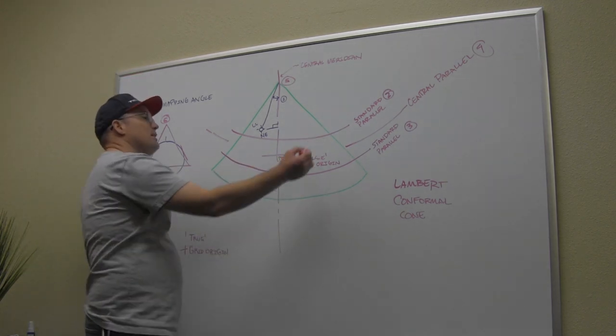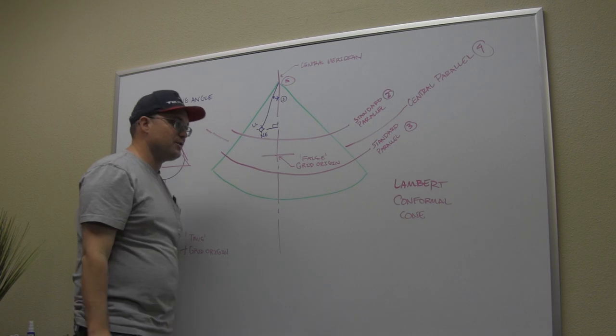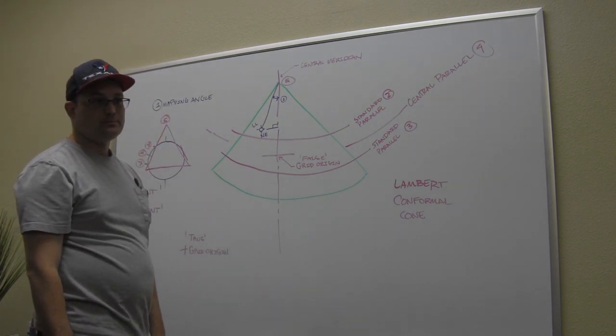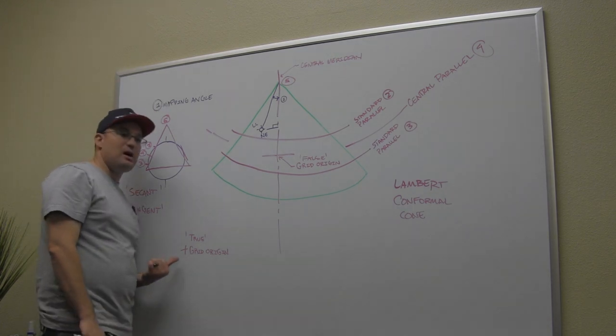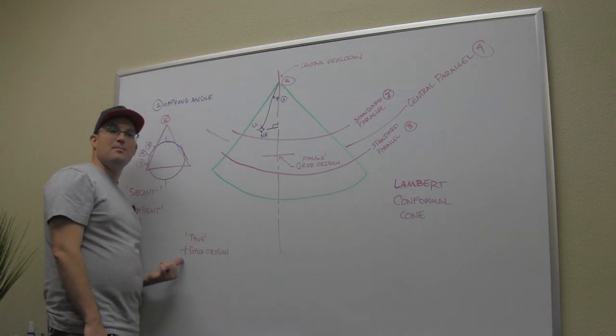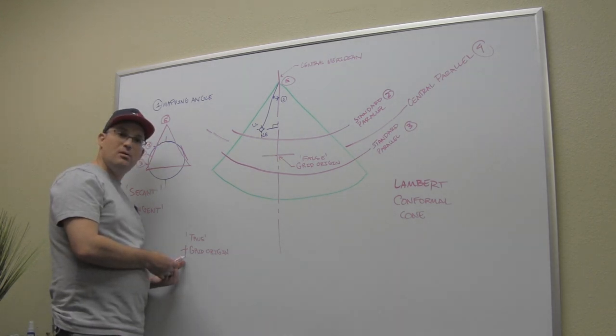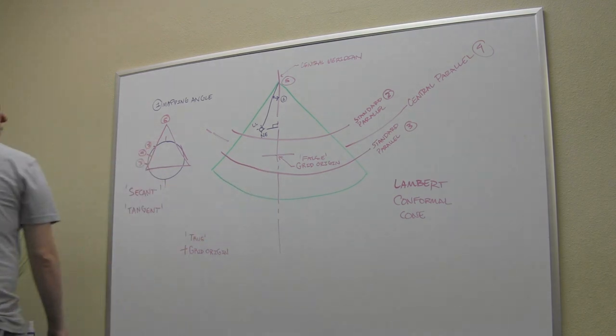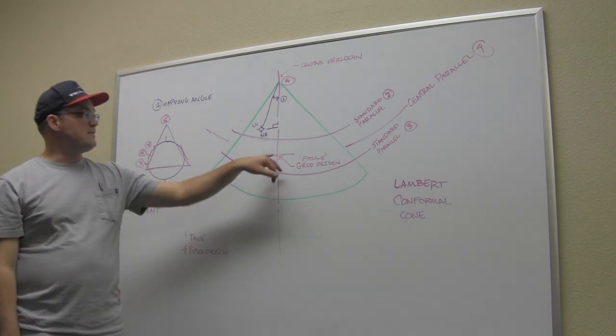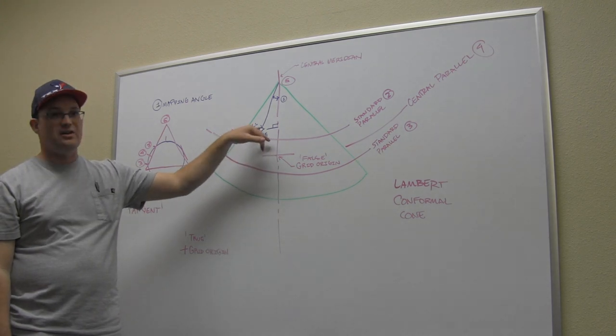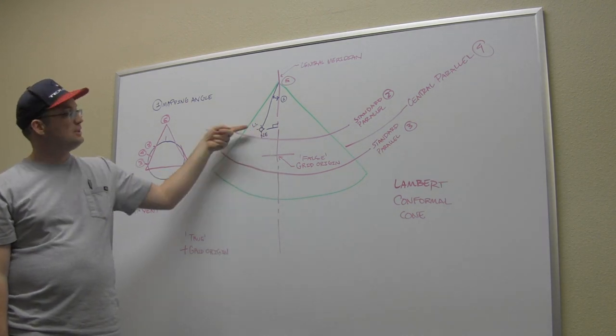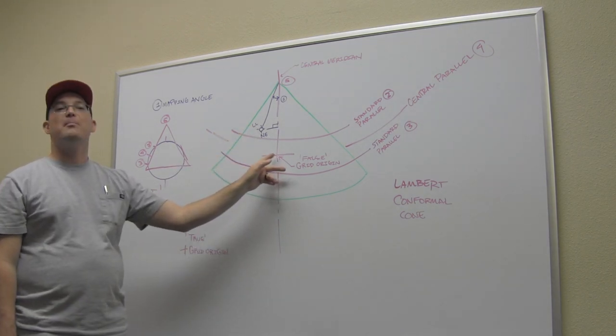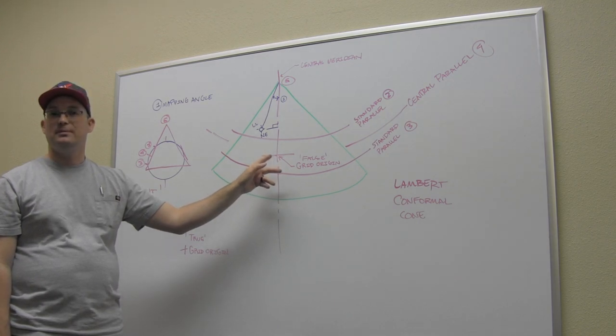Where the central meridian and the standard parallels intersect is called the false origin or the false grid origin. Then down here, somewhere in the lower left, you have the true grid origin. This is zero, zero. When they design these systems, they don't want this to be zero, zero. Why not? Think about it if you were in AutoCAD. If this is zero, zero, what kind of coordinates are you going to have? Positive and negative. So they give this some other number, big number, so that you don't have any negative coordinate values.